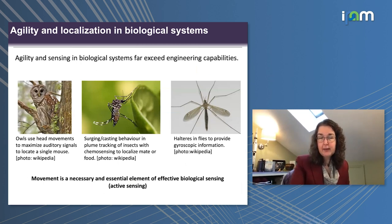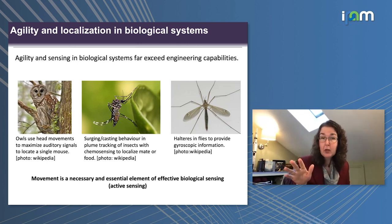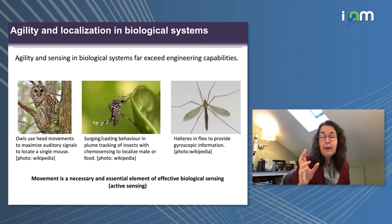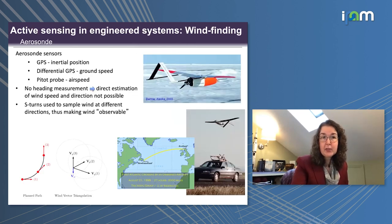One place where we can improve that bound is by not using the separation principle. For linear systems, sensing and actuation are separate — how you control the system doesn't affect how sensing works. But in biological systems like bats, as well as other systems I'm showing here, how the system is moving is actually used to augment sensing capabilities. This is referred to as active sensing — something we all use in our daily lives without thinking about it — and it turns out we can leverage this to improve sensing.